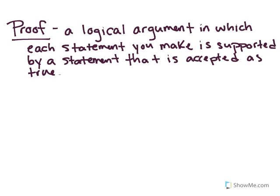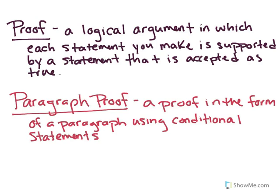The next thing we're going to talk about is a proof. A proof is basically a logical argument in which each statement you make is supported by a statement that is accepted as true. Statements accepted as true are postulates — they can also be theorems or corollaries. We look at postulates first because they are already accepted to be true. The kind of proof we're looking at in this section is called a paragraph proof, which is a proof in the form of a paragraph that uses conditional statements — every statement is an if and a then. Paragraph proofs are also called informal proofs.